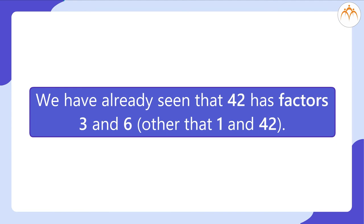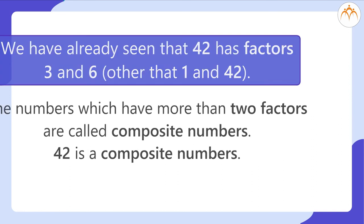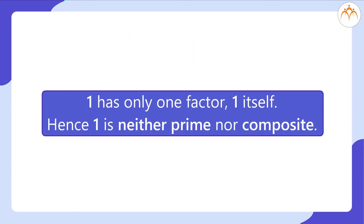We have already seen that 42 has factors 3 and 6 other than 1 and 42. The numbers which have more than 2 factors are called composite numbers. 42 is a composite number. 1 has only one factor, 1 itself. Hence, 1 is neither prime nor composite.